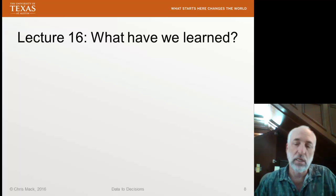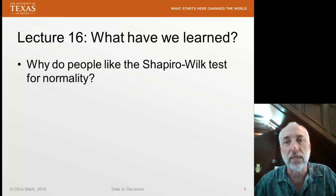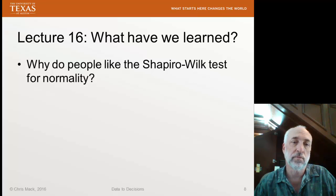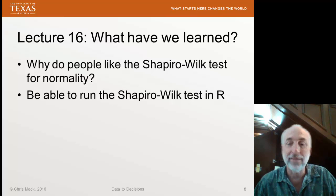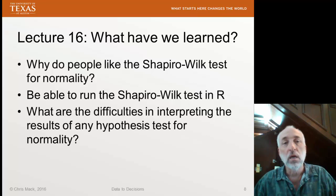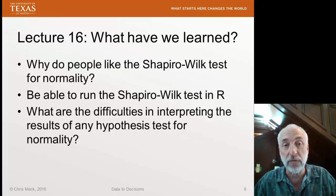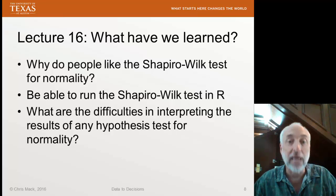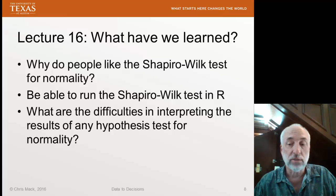All right, what we learned in this short lecture on the Shapiro-Wilk test: first, why people like the Shapiro-Wilk test for normality; how to run the Shapiro-Wilk test in R using a simple one-line command; and how to interpret the results of that test as given to you in R. But also, given that you've run the Shapiro-Wilk test, what are the difficulties in interpreting the results — or in fact, any hypothesis test for normality. That's this lecture. Next time, we're going to start talking about outliers.